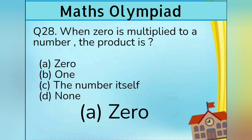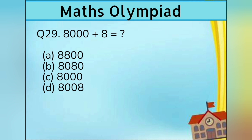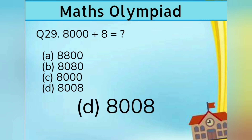Question number 29. 8,000 plus 8 equals to: Option A 8,800, Option B 8,080, Option C 8,000, and Option D 8,008. Answer is Option D 8,008.